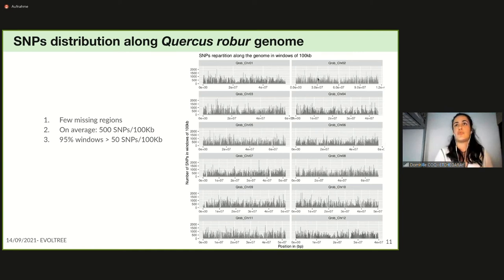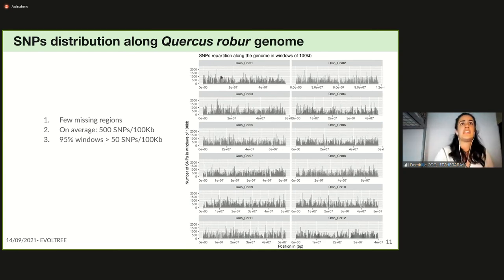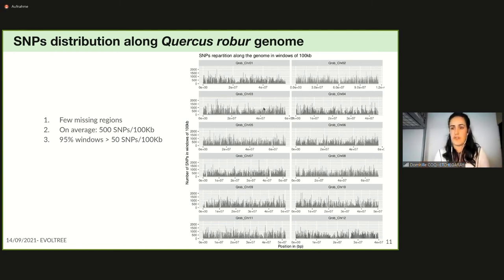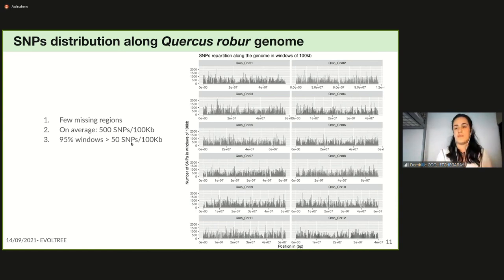From this matrix we looked at SNP distribution along the Quercus robur genome. On the plot we show the 12th chromosome of the Quercus genome, with the y-axis representing the number of SNPs in windows of 100 kb. There are few missing regions in our SNP matrix, and on average we have 500 SNPs per 100 kb window.